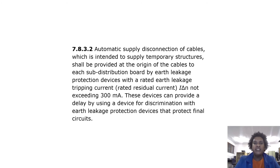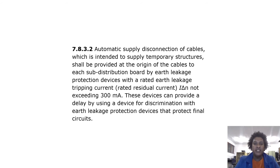Automatic supply disconnection: cables intended to supply temporary structures shall be provided at the origin of the cables to each sub-distribution board with earth leakage protection devices rated not exceeding 300 milliamps. These devices can provide a delay by using a device for discrimination with earth leakage protection devices that protect final circuits.